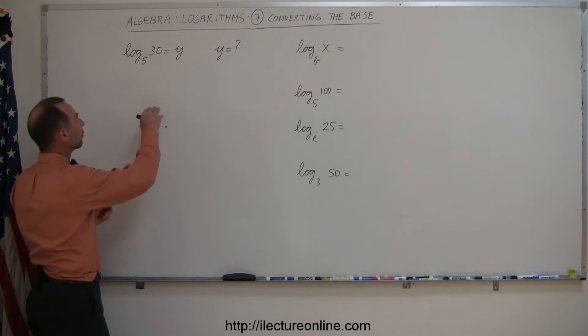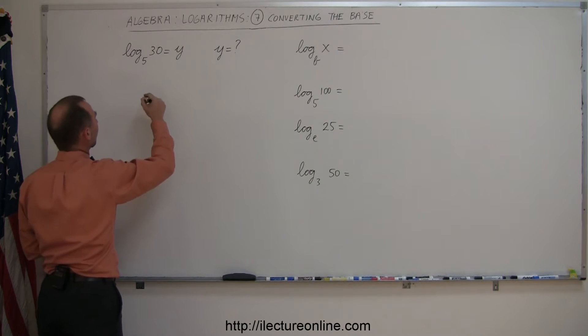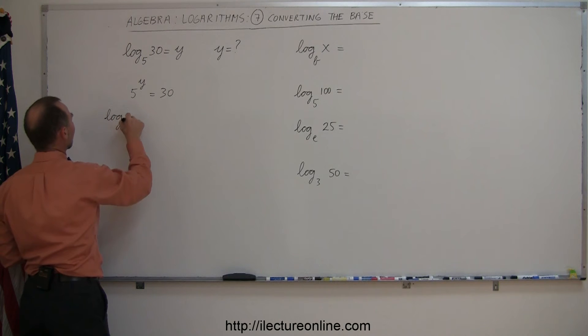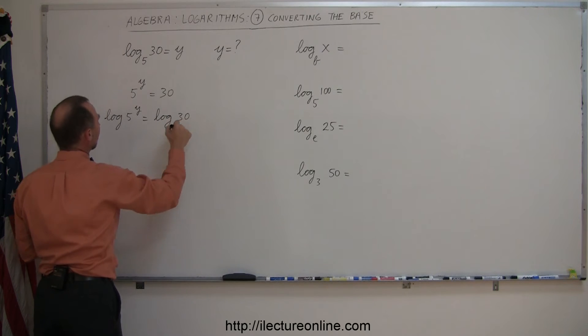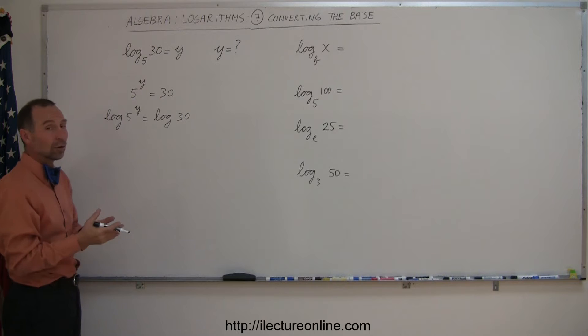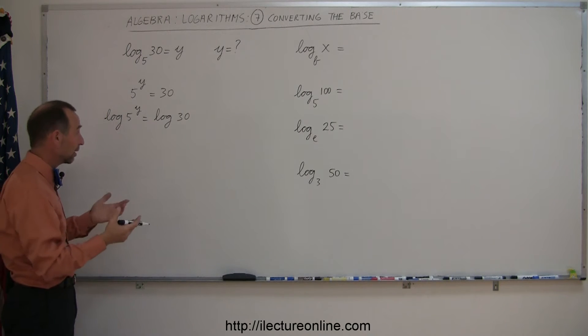So what you want to do is first convert this into the exponential form. So we take the base 5 raised to the y power is equal to 30, and now you take the log of both sides, so you take the log of 5 to the y power equals the log of 30. Now, of course, here we took the log of base 10, but we can use the log to any base, so you convert it to base 3 or base 4, base whatever, but in this case I did log base 10.